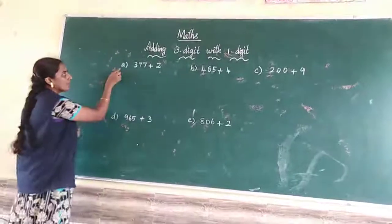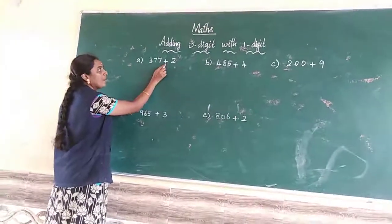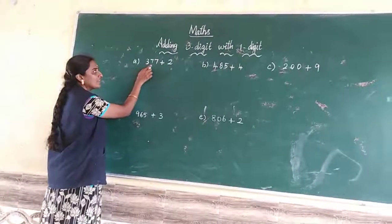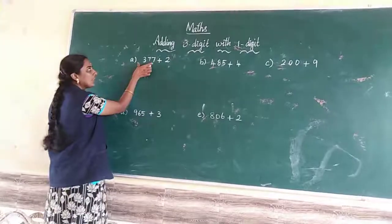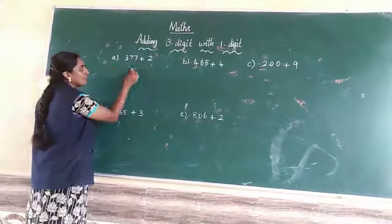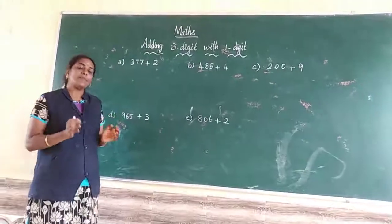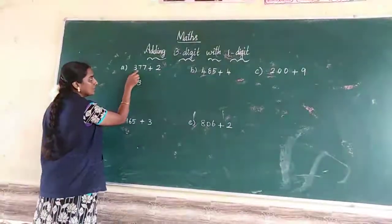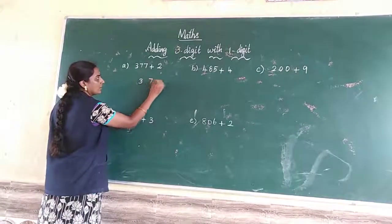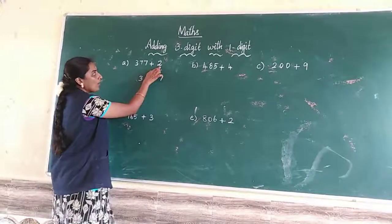Let me go to the sum. First A sum: 377 plus 2. What do we first write? First take this number. How to write? Already I said in the previous class, give that gap and write. So first 377. You have another plus, you have plus.